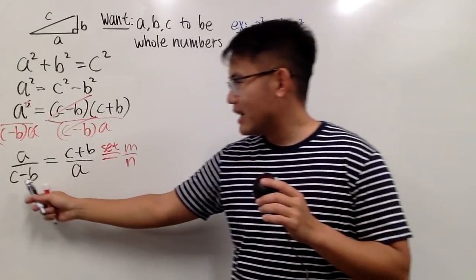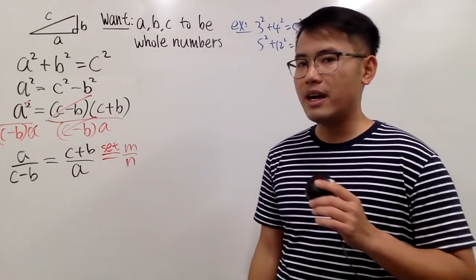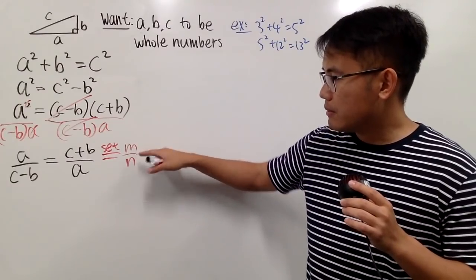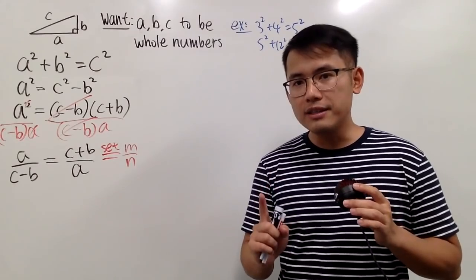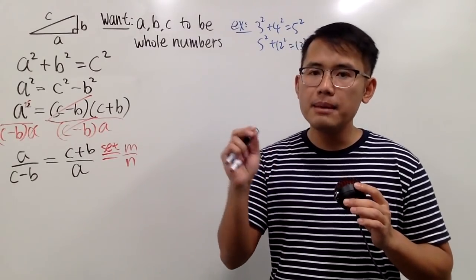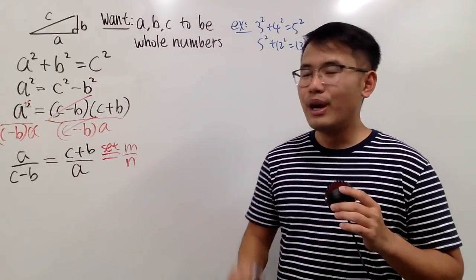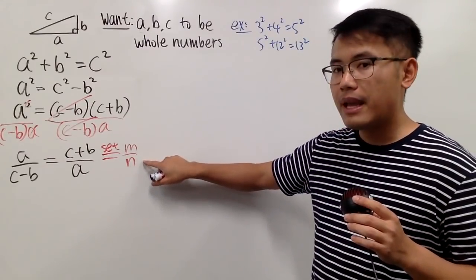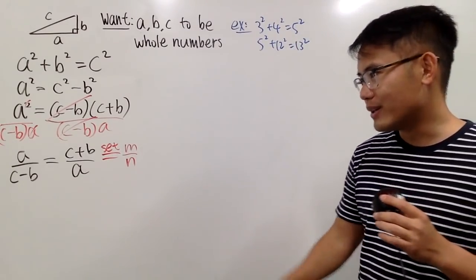All right. Now what? Notice I have this equal to M over N. Likewise, this is equal to M over N. And you see, I come up with two new unknowns, M and N. Our goal right here is that I want to write A, B, and C all in terms of M and N. Hopefully, later on, I can just assign some value to M and N, and then I can generate A, B, and C. That's the idea.